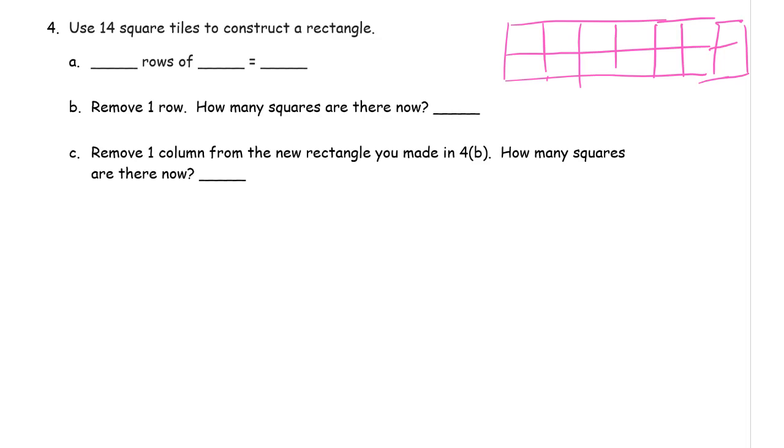But if that's the one you made, then you could have 7 rows of 2. And you could have 1 row of 14 or 1 column of 14. But I have 2 rows of 7 for 14.